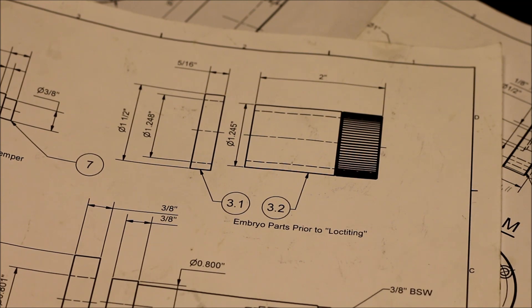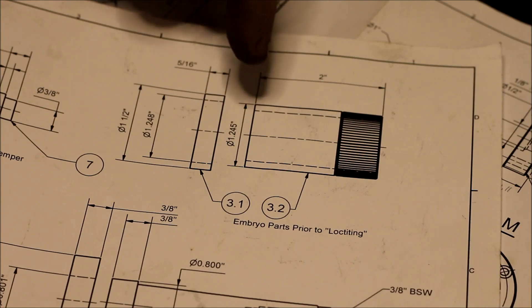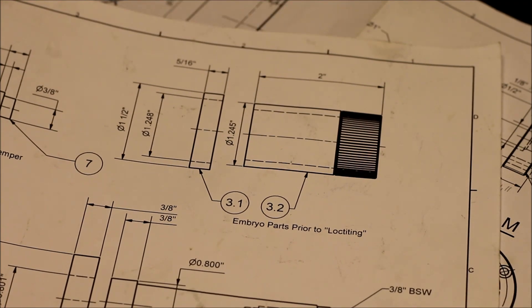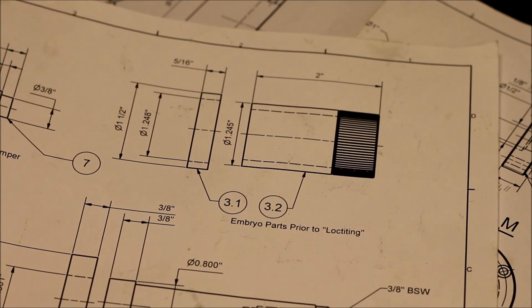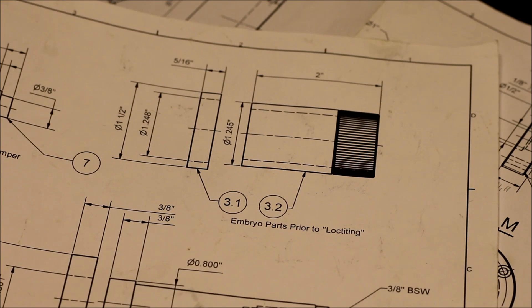The plan suggests making the pivot tube from two pieces - one round steel bar and a ring glued with Loctite. But I think I will do it from one solid piece. I'll save a little time that way.